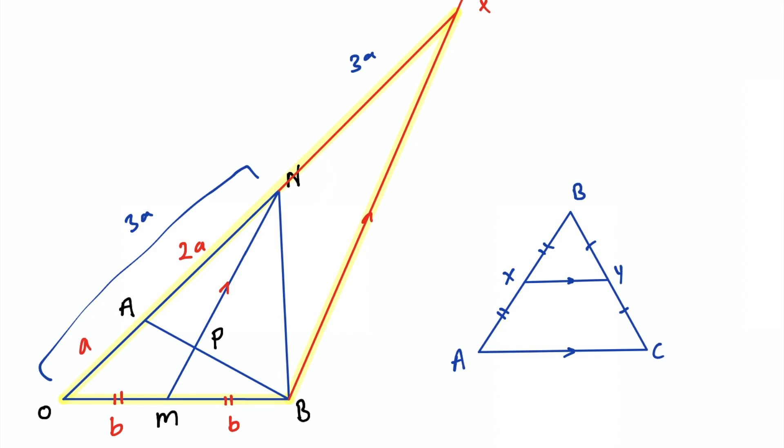And now notice a different triangle, notice this triangle in here AXB, and then look at the line PN. Well if it's dividing the line AX in the ratio 2 to 3 then it must also divide the line AB in the ratio 2 to 3.